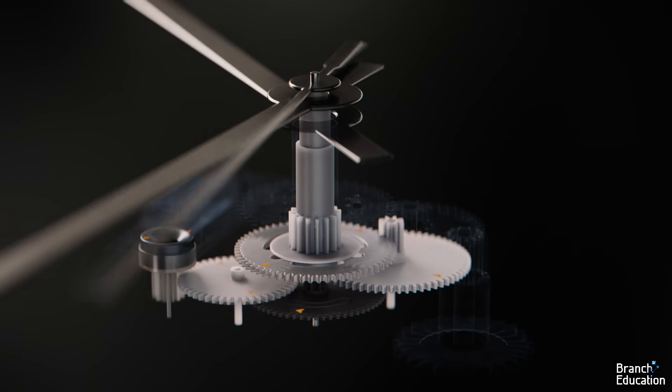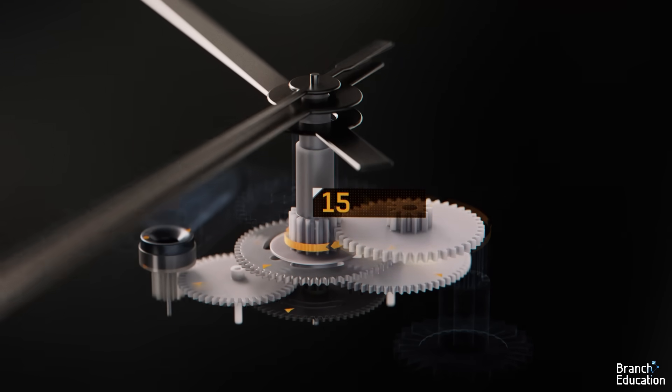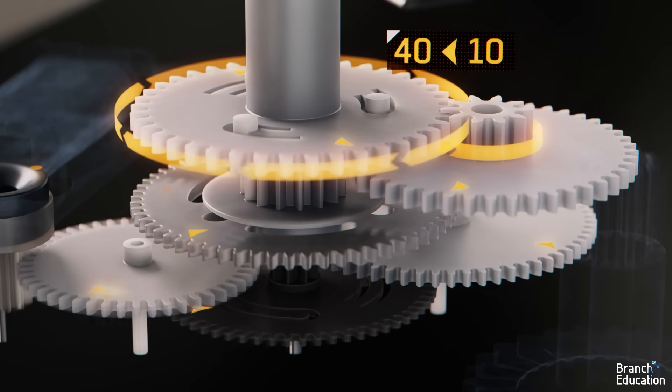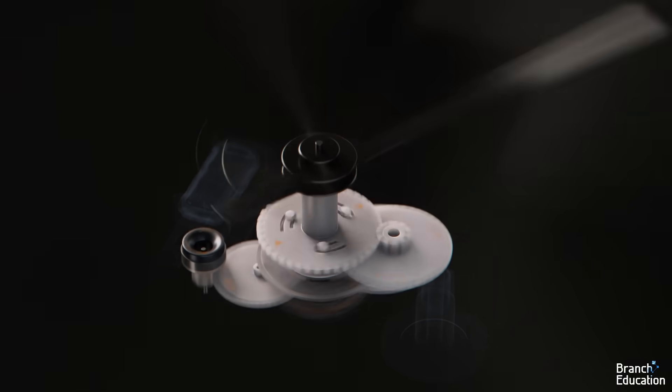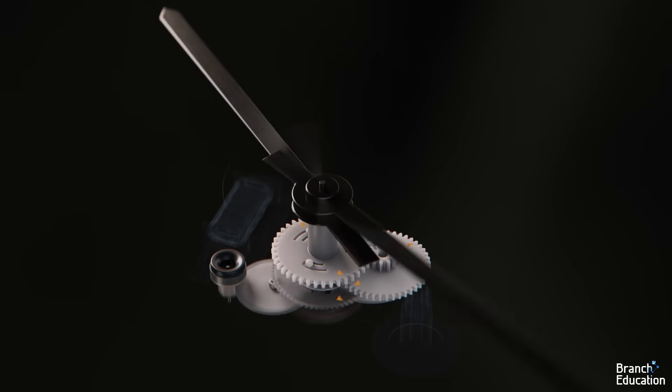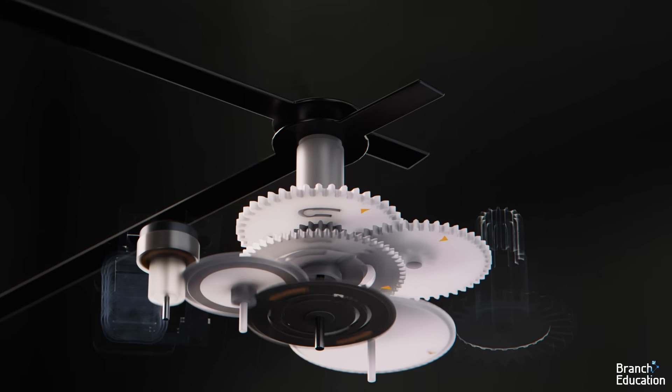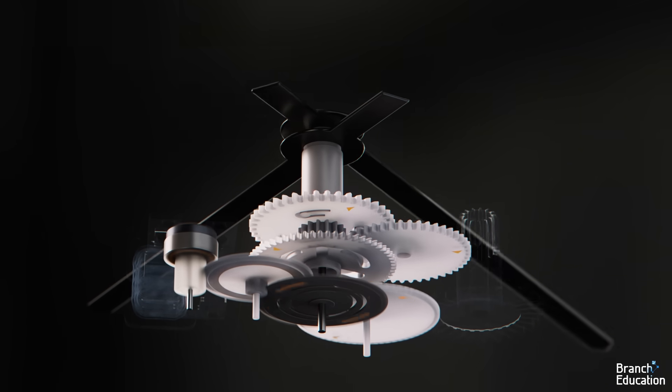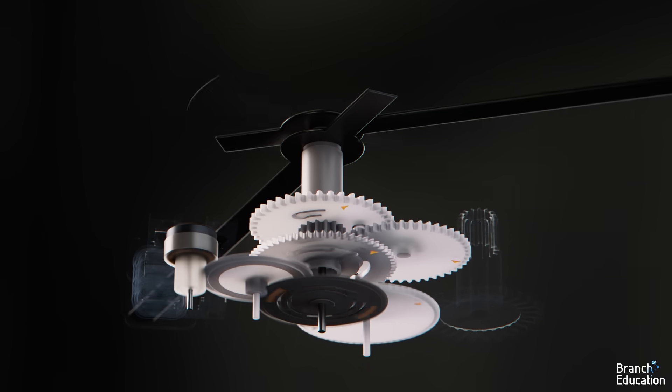And finally, the hour hand is driven via a 15 to 45 reduction to the idler and a 10 to 40 gear reduction to produce one rotation every 12 hours. As a result, we have three shafts rotating to which the hands of the clock are mounted, each rotating at different speeds.